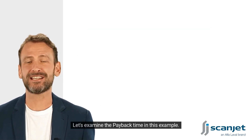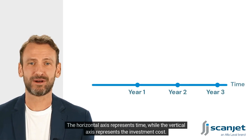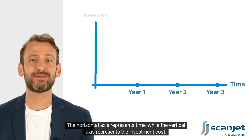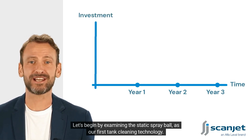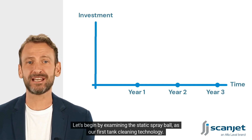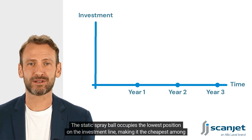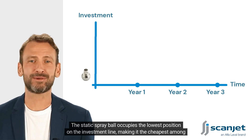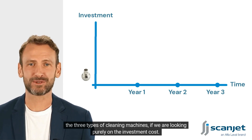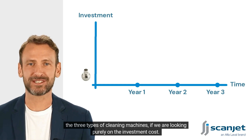Let's examine the payback time. In this example, the horizontal axis represents time while the vertical axis represents the investment cost. The static spray ball occupies the lowest position on the investment line, making it the cheapest among the three types of cleaning machines if we are looking purely at investment cost.